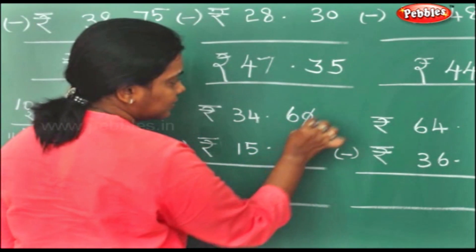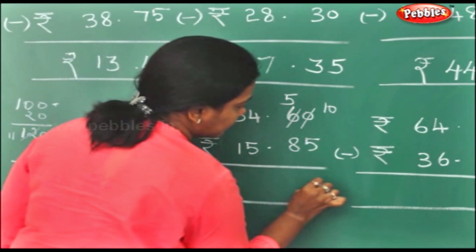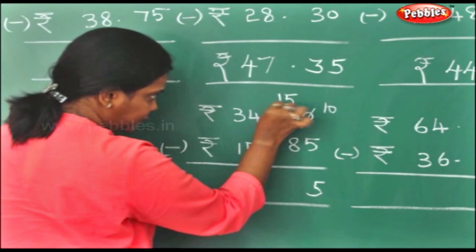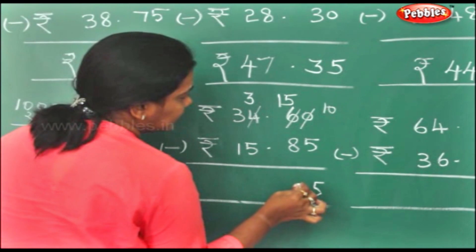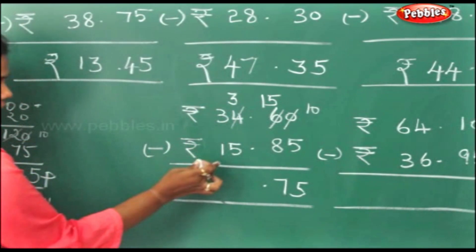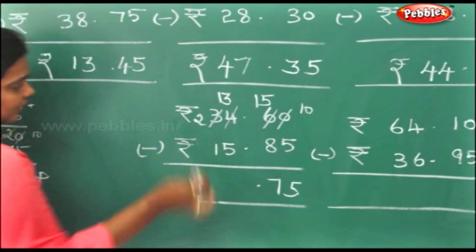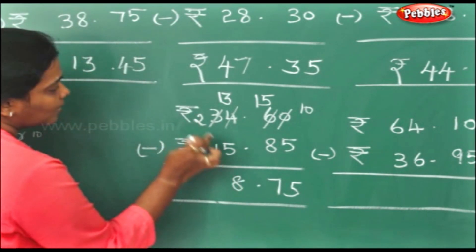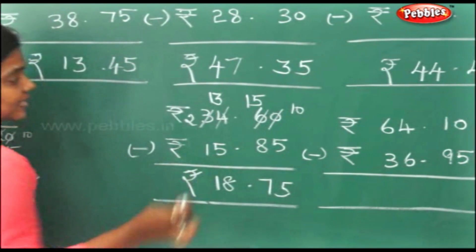Here, 0, so this becomes 10, this becomes 5. 10 minus 5 is 5. You cannot minus it, so this becomes 15, this becomes 3. 15 minus 8 is 7. 3 again you cannot minus from 5, so this becomes 13, this becomes 2. 13 minus 5 is 8. 2 minus 1 is 1. So this will be rupees 18 and 75 paise.